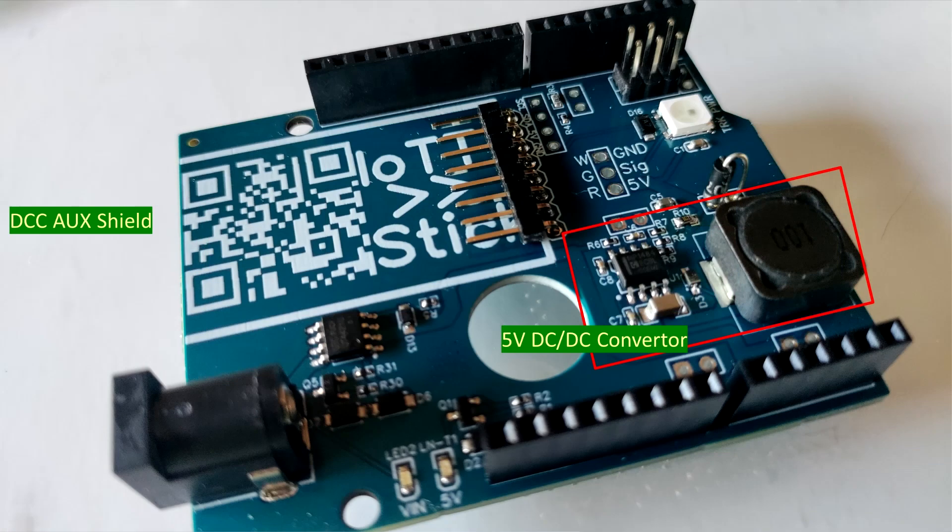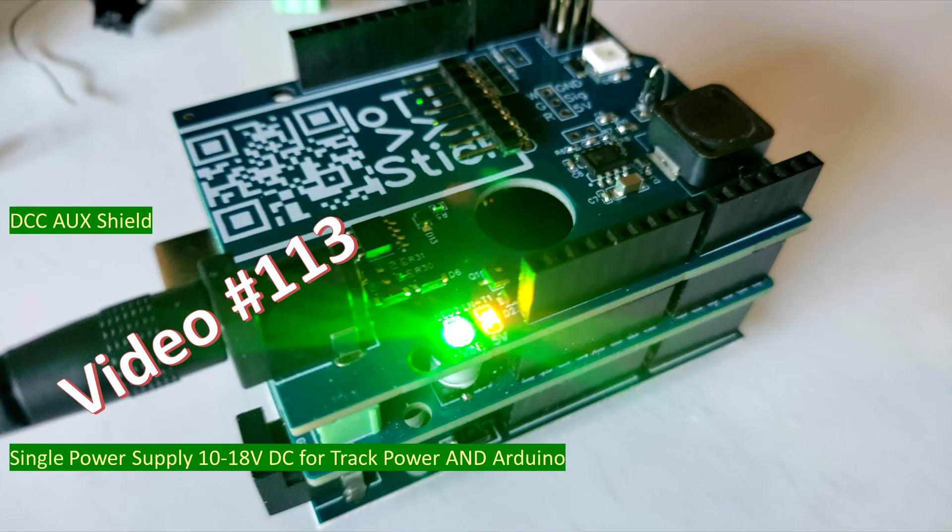More recently I designed a separate DCC aux shield for that purpose as shown in video number 113. That design was straightforward and it seemed to work flawlessly, until I got news from a user that smoke was coming out of his Arduino.